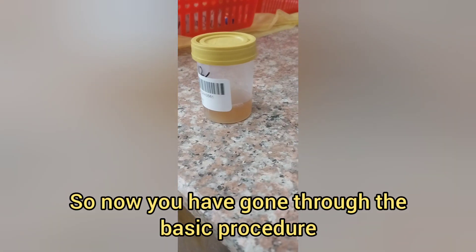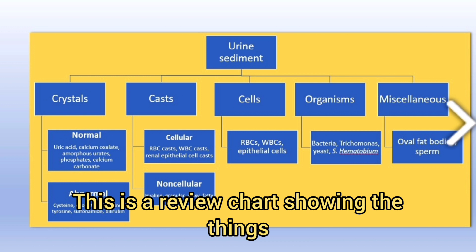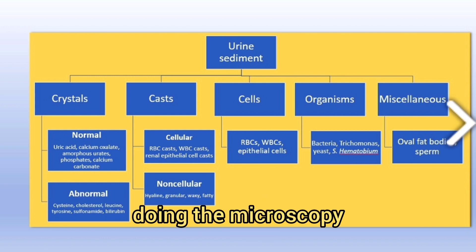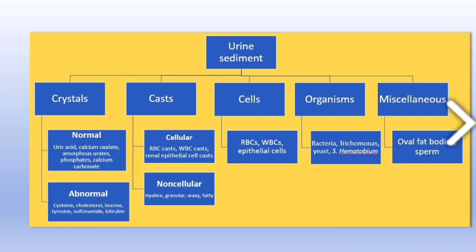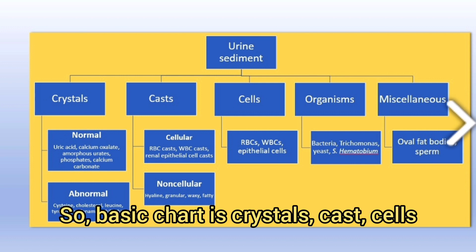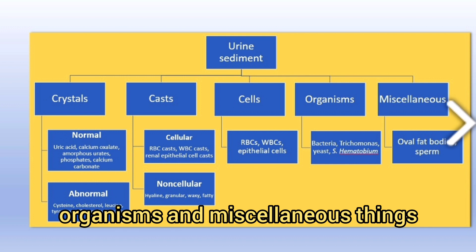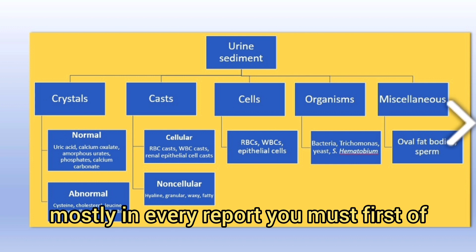Now you have gone through the basic procedure. This is a review chart showing the things you are supposed to see when doing the microscopy — once you have focused at 10x, then at 40x. The basic chart covers crystals, casts, cells, organisms, and miscellaneous things.